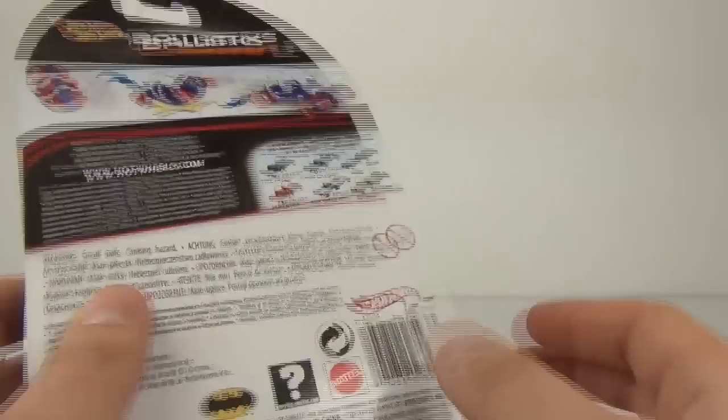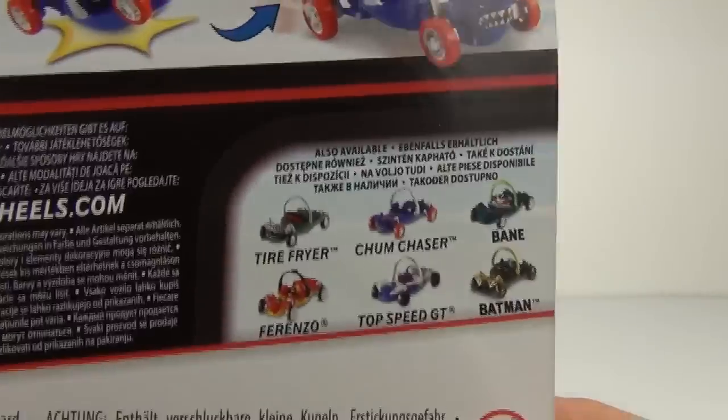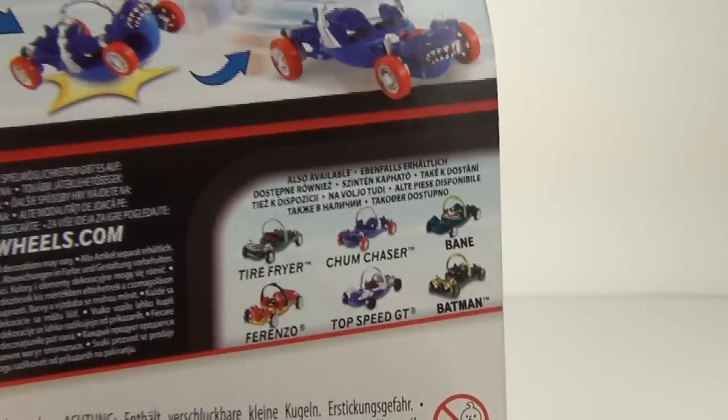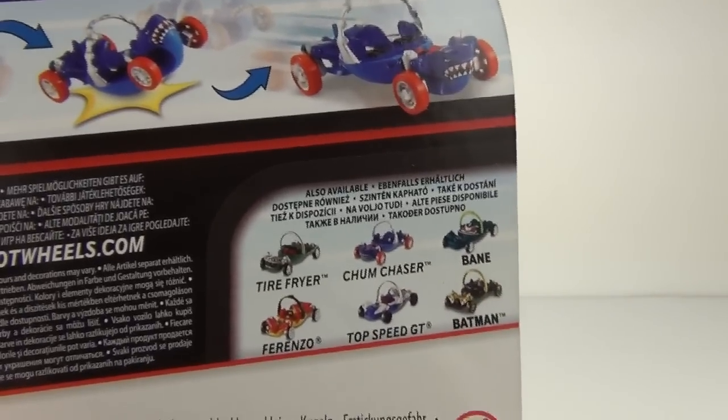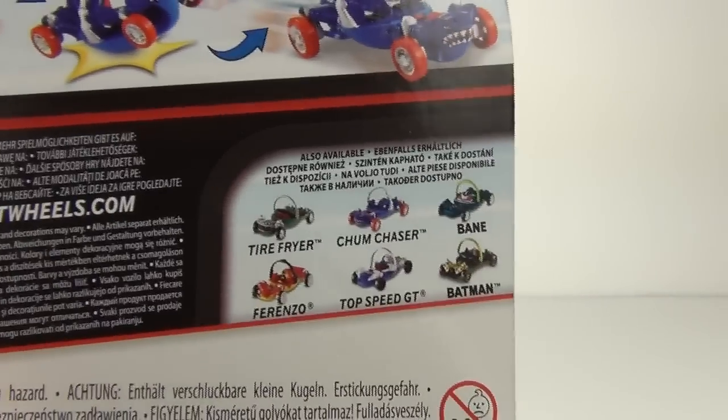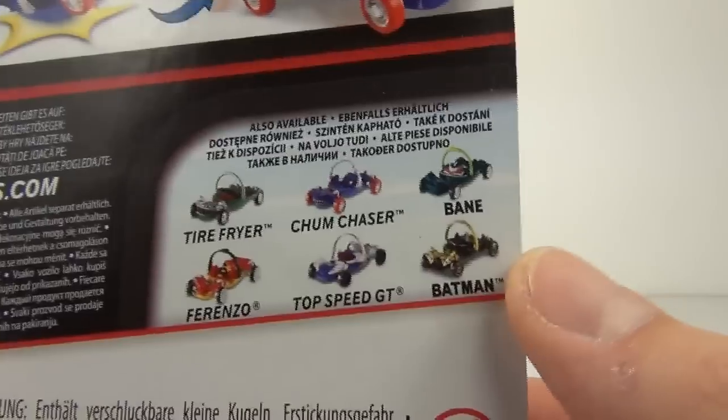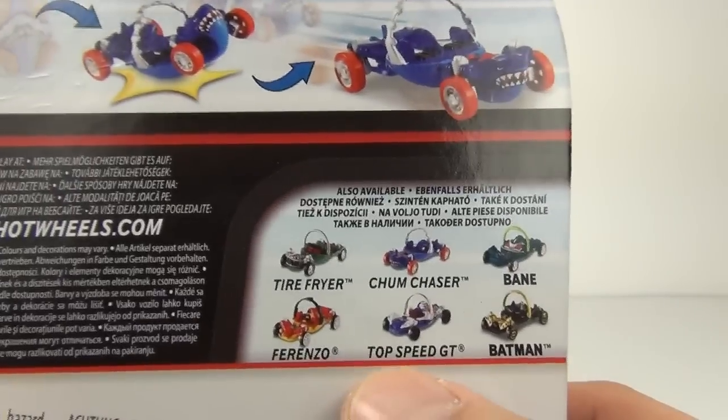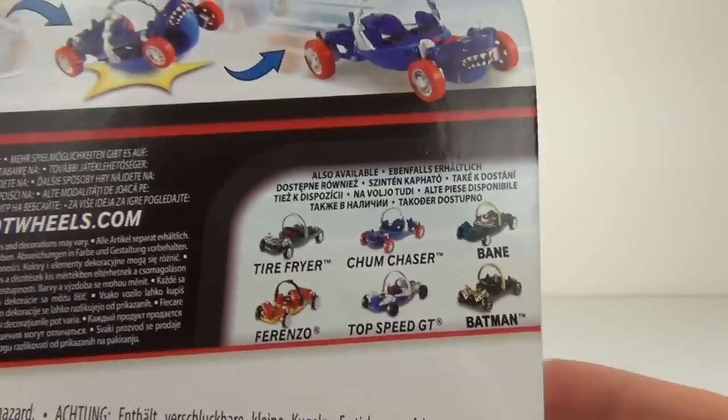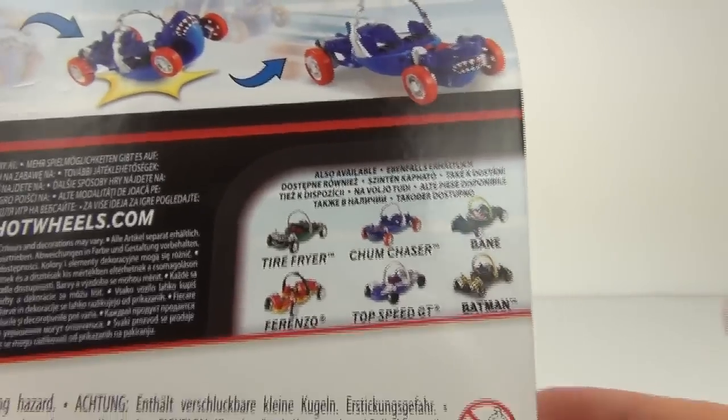Like I say, this is Chum Chaser and on the back you can see the other ones you can collect. This was I'm pretty sure wave 1. There is a second wave out now and you can get the Superman car in the second wave, but in this one you can get Bane and Batman and Forenzo, Top Speed GT, Chum Chaser which we have now, and Tire Fryer.